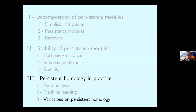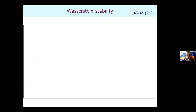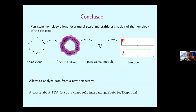To conclude: persistent homology is a multi-scale, stable solution to the problem of homological inference — providing stable estimation of the homology of data sets. Thank you very much.